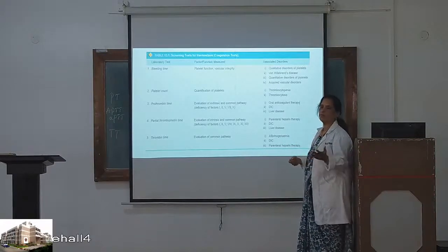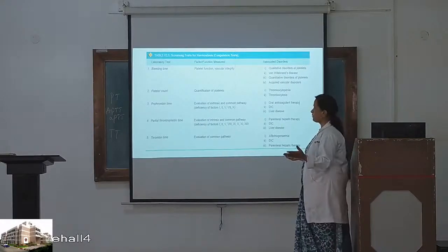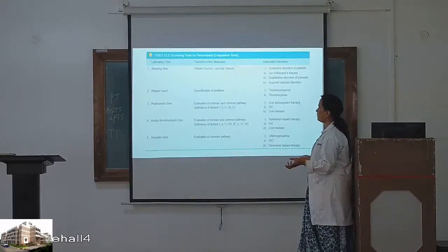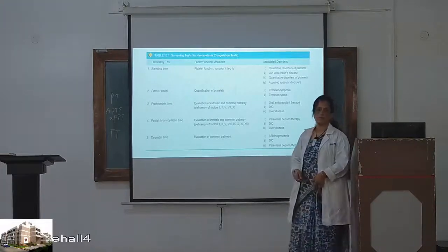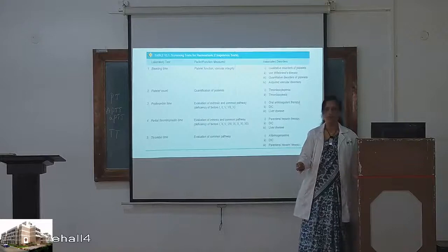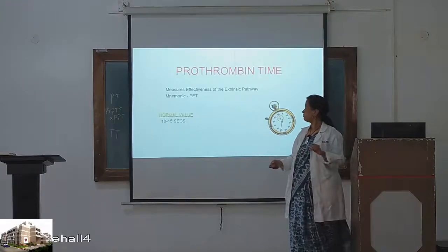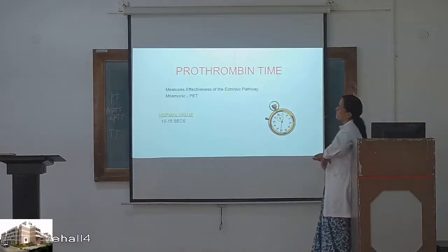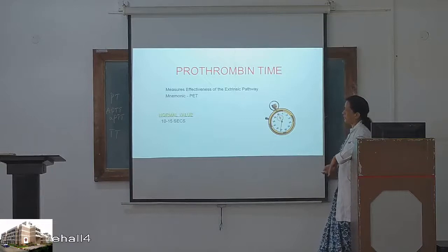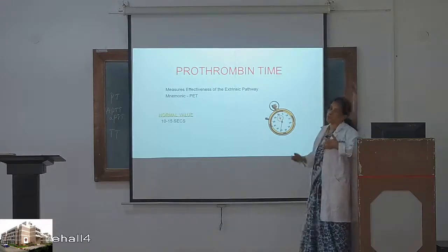Normal value of PT is 10 to 15 seconds. If more than 15 seconds, prothrombin time is prolonged, indicating a defect in the extrinsic pathway and common pathway. Partial thromboplastin time measures effectiveness of the intrinsic pathway. Normal value is 25 to 40 seconds. If prolonged, it detects deficiency of higher clotting factors — 8, 10, 11, 12.